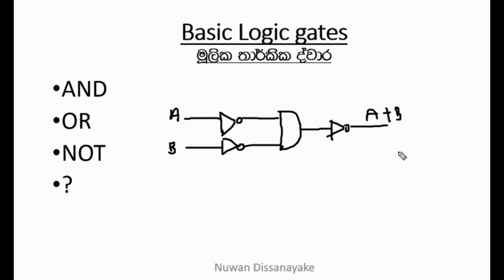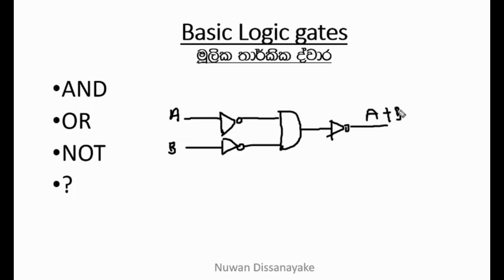This is a NOR gate. If you want to get a NOR gate or not, it will be a NOR gate. If you want to get a NOR gate, we can get a NOR gate. What can we do to keep the gates from the other gate?